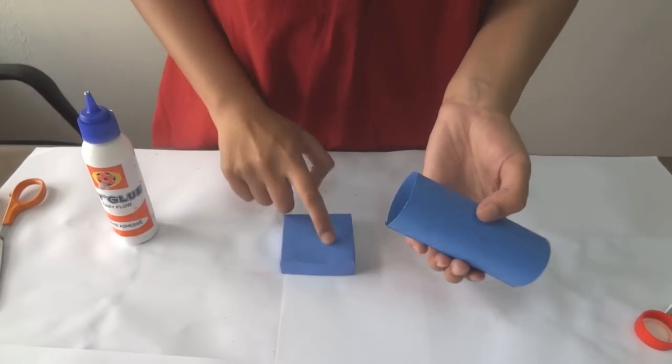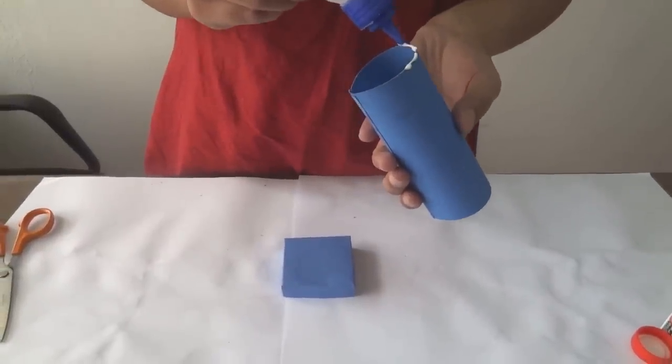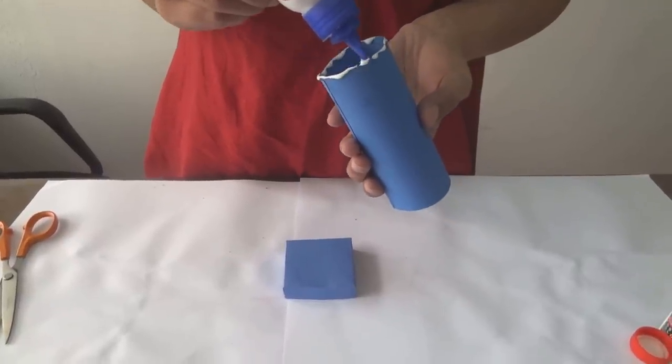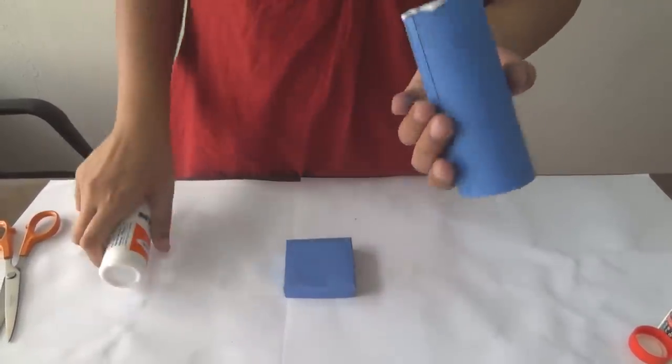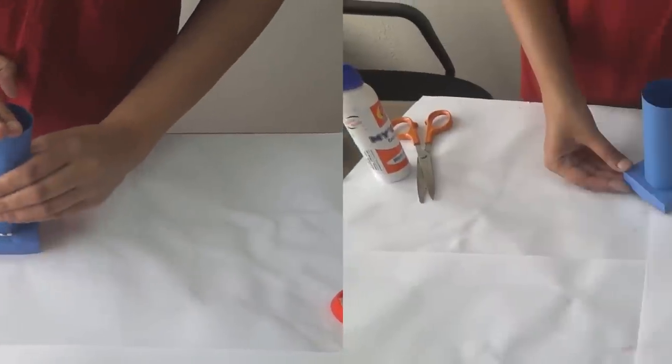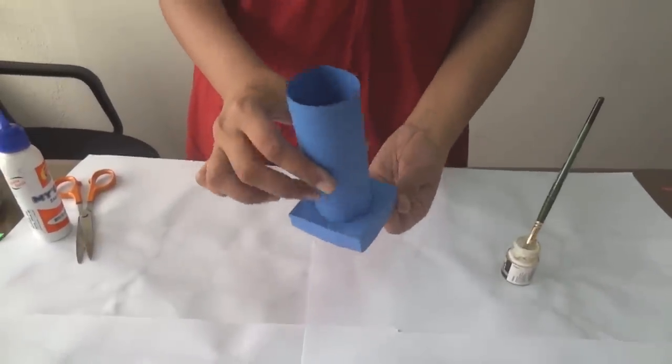Now we have to paste this roll on the base. So just put Fevicol on your base. Like this. Don't worry about the excess Fevicol it will dry off. And just paste your box over this. Once the Fevicol dries your pot is ready. It will look like this.